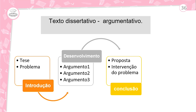Começando aqui: texto dissertativo argumentativo. Aqui está a estrutura do texto dissertativo argumentativo. Nós temos na introdução a tese e o problema. Depois de você construir a sua tese, você vai defendê-la. Pode usar até três argumentos, Amadinho. Se você usar três argumentos, nós vamos ter três parágrafos. No desenvolvimento: argumento 1, argumento 2 e argumento 3. Para finalizar, temos a nossa proposta de intervenção, que é a conclusão. Então, para o texto dissertativo, nós temos introdução, desenvolvimento e conclusão. Essa é a estrutura do texto dissertativo.